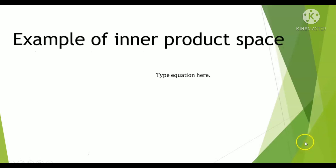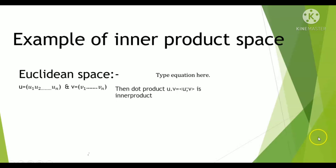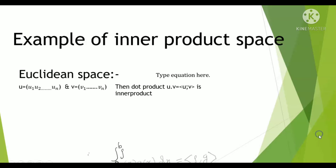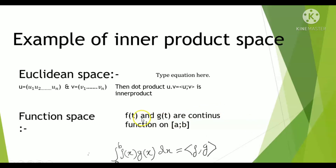Now let's look at examples of inner product spaces. For the function space: if f(t) and g(t) are continuous functions on [a, b], then the inner product of f and g is defined as the integral from a to b of f(x) times g(x) dx.